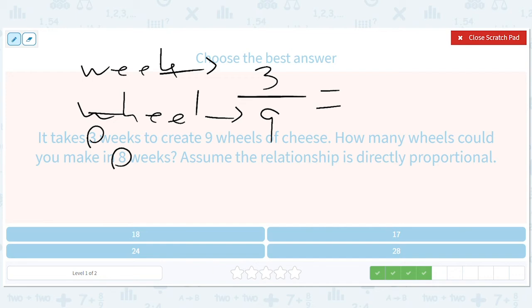How many wheels could you make in eight weeks? So that means the x is on top because we don't know the number of weeks. Oh, no, we know the number of weeks. We know the number of weeks is eight. And how many wheels? That's what we don't know. So three weeks, nine wheels. How many wheels in eight weeks? They've changed up the order. So it's a little bit confusing.